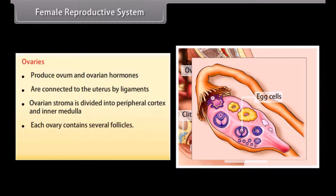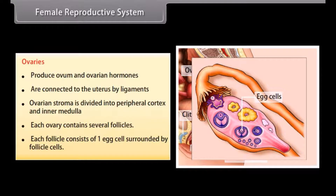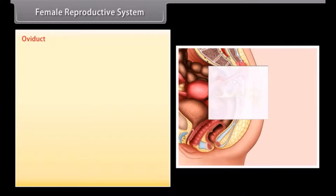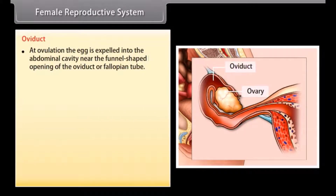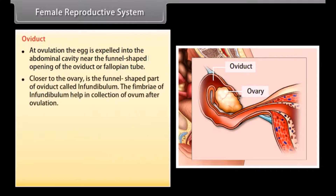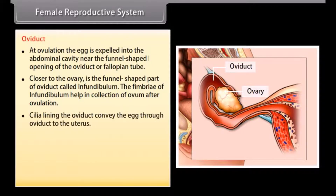Each ovary contains several follicles, and each follicle consists of one egg cell surrounded by follicle cells. At ovulation, the egg is expelled into the abdominal cavity near the funnel-shaped opening of the oviduct, or fallopian tube. The funnel-shaped part of the oviduct closest to the ovary is called the infundibulum. The fimbriae of the infundibulum help collect the ovum after ovulation, and cilia lining the oviduct convey the egg through the oviduct to the uterus.